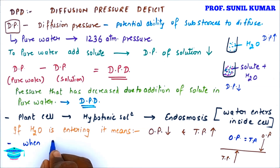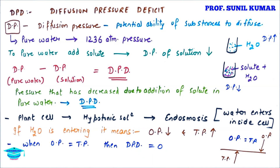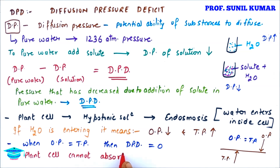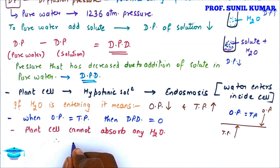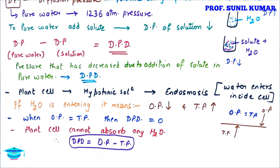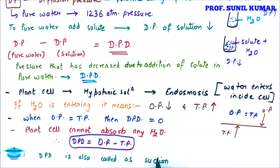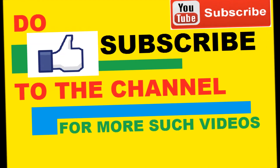As turgor pressure increases and osmotic pressure decreases, there will be a time when osmotic pressure equals turgor pressure — at that time DPD is 0, meaning the plant cell cannot absorb any more water. So DPD equals Osmotic Pressure minus Turgor Pressure. DPD is also called the suction force or suction pressure.